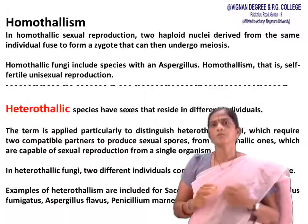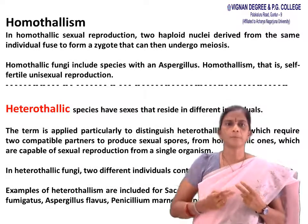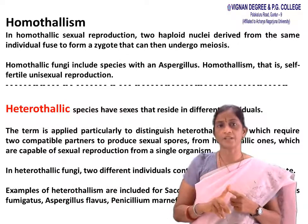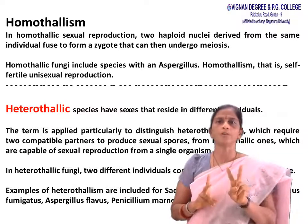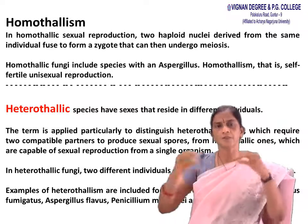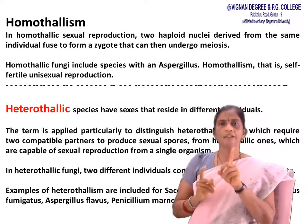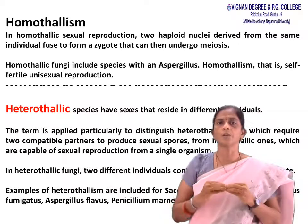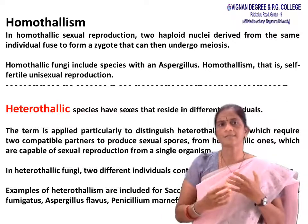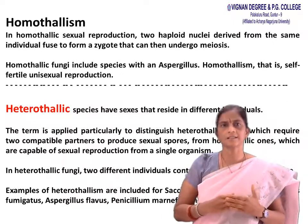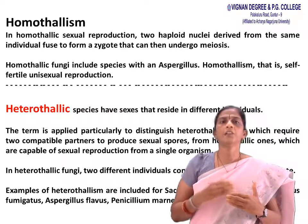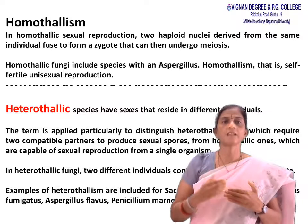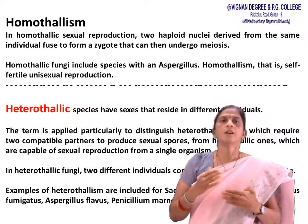The zygote divides to make spores. Two different methods of reproduction: first, homothallism — a sexual reproduction in which two haploid nuclei derived from the same individual fuse to form a zygote, then undergo meiosis. Example is Aspergillus. Homothallism is also called self-fertilized unisexual reproduction.